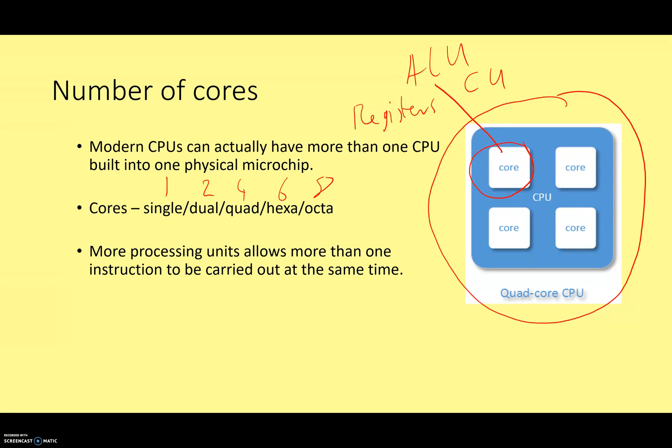So why would you want to have multiple CPUs built into one chip? One CPU can carry out one instruction per clock cycle. If you have two cores, you can carry out two instructions per clock cycle. Four cores, four instructions per clock cycle. So you can do more things at the same time.